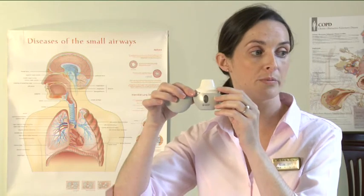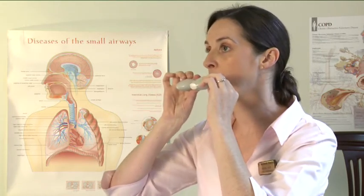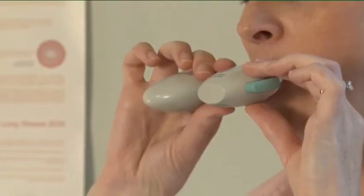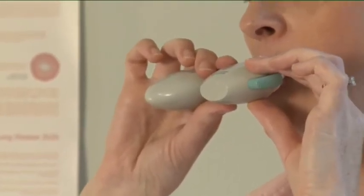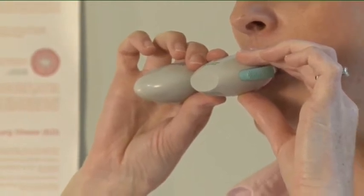Breathe out completely away from the device. Raise the Handihaler to your mouth and close your lips tightly around the mouthpiece. Keep your head in an upright position. Breathe in slowly and deeply, but at a rate sufficient to feel the capsule vibrate.